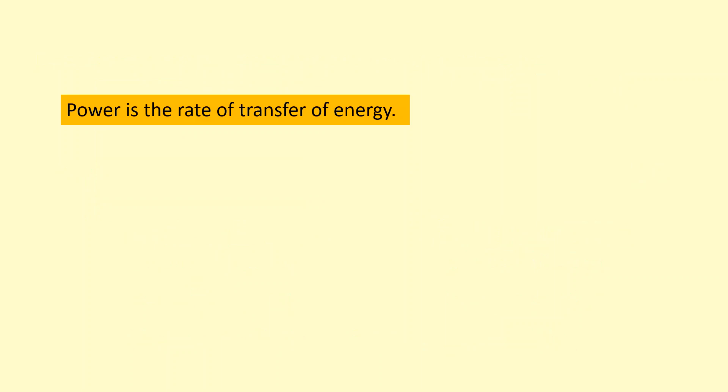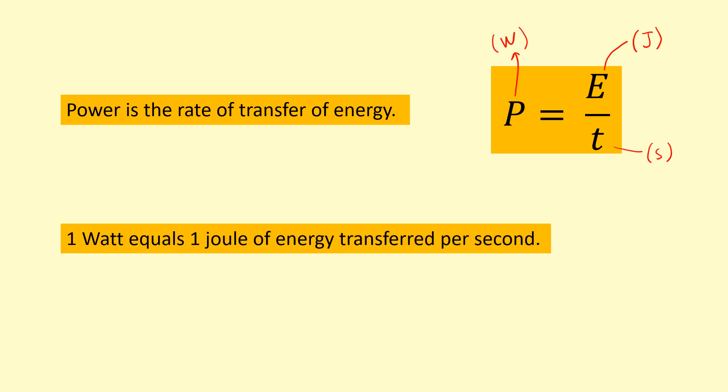Power is the rate of transfer of energy. It's how quickly the energy is transferred, or the energy transferred per unit time. The equation is power equals energy over time, where energy is measured in joules, and you can use any type of energy - gravitational potential energy, kinetic energy, work done, and so on. Time is measured in seconds, and power in watts. 1 watt equals 1 joule of energy transferred per second.